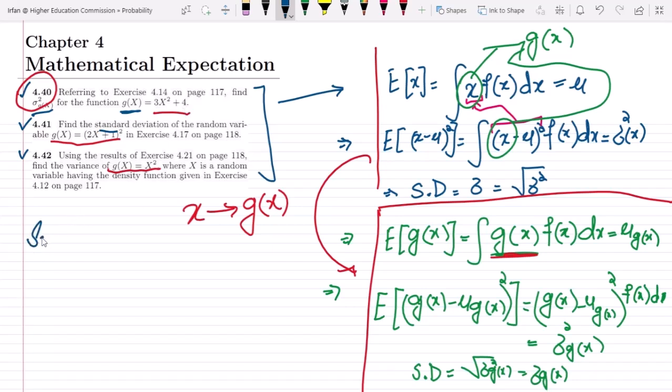In solving it, we have from exercise 4.14, you can see that the density function is 2 by 5 times x plus 2.